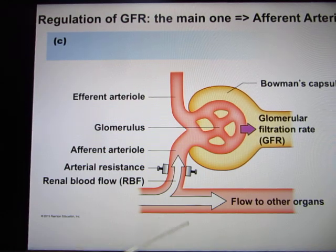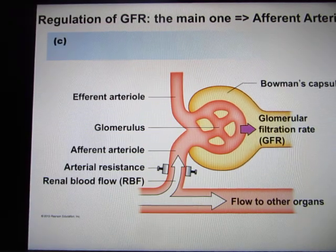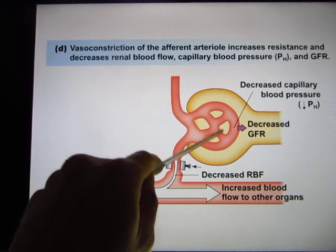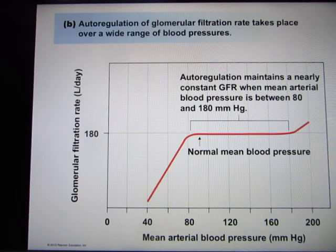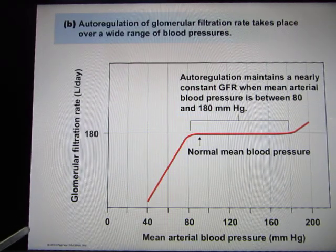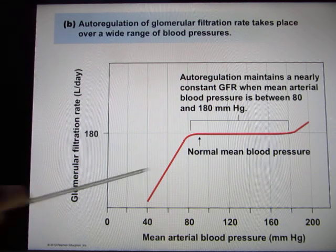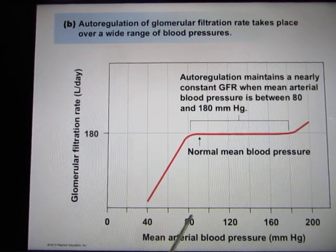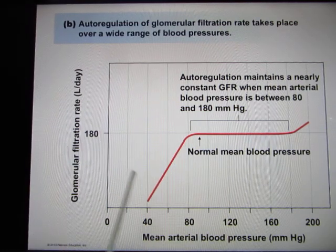So when your blood pressure changes, they can constrict or dilate the arteriole to make sure GFR is constant. If they constrict it, they can decrease GFR because hydrostatic pressure decreases. Because of this auto-regulation, if blood pressure stays between 80 to 180 mmHg, the GFR is constant — that's a big range covering most of us throughout our whole life.